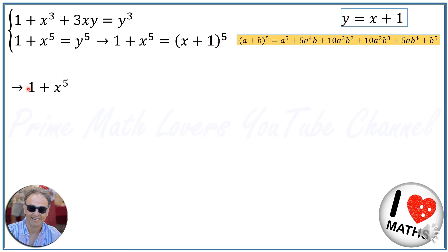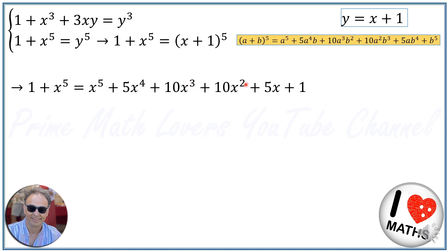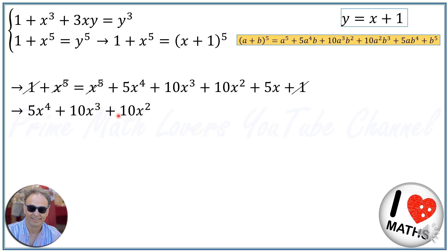Applying this to (x plus 1) to the 5th, we have 1 plus x to the 5th equals x to the 5th plus 5x to the 4th plus 10x cubed plus 10x squared plus 5x plus 1. Canceling the 1 and x to the 5th from both sides, we get 5x to the 4th plus 10x cubed plus 10x squared plus 5x equals 0.